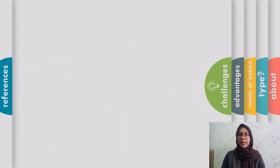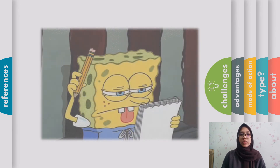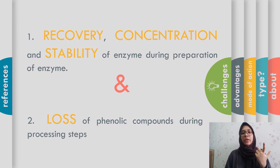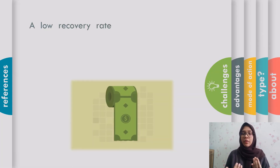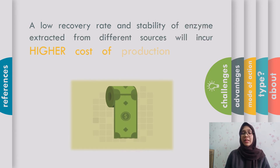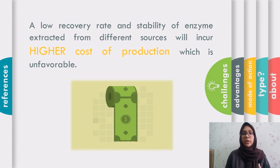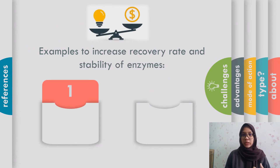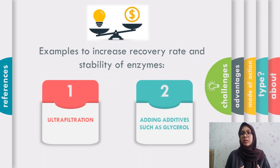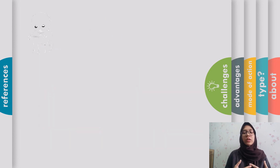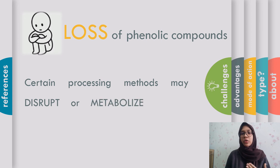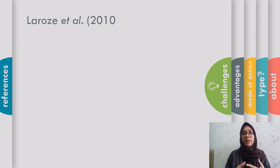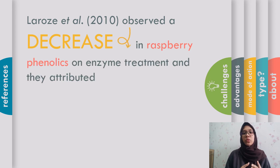I am Nurjwani Hazirah Binti Abdul Hadi and I will be presenting on the challenges of using enzyme during production of fruit juice. We highlight two common challenges: recovery and stability of enzyme during extraction, and loss of phenolic compounds during processing steps. Low recovery rate and unstable enzyme will result in higher production costs, which is unfavorable for the industry. High recovery rate of enzyme can be obtained through ultrafiltration, and enzyme can be stabilized through addition of additives such as glycerol. The loss of phenolic compounds is also a concern, as certain processing steps or usage of enzymes may disrupt or metabolize the phenolic compounds into another compound. Leros et al. have observed a decrease in raspberry phenolic compounds due to the secondary action of certain enzymes such as beta-glucosidase or beta-galactosidase.